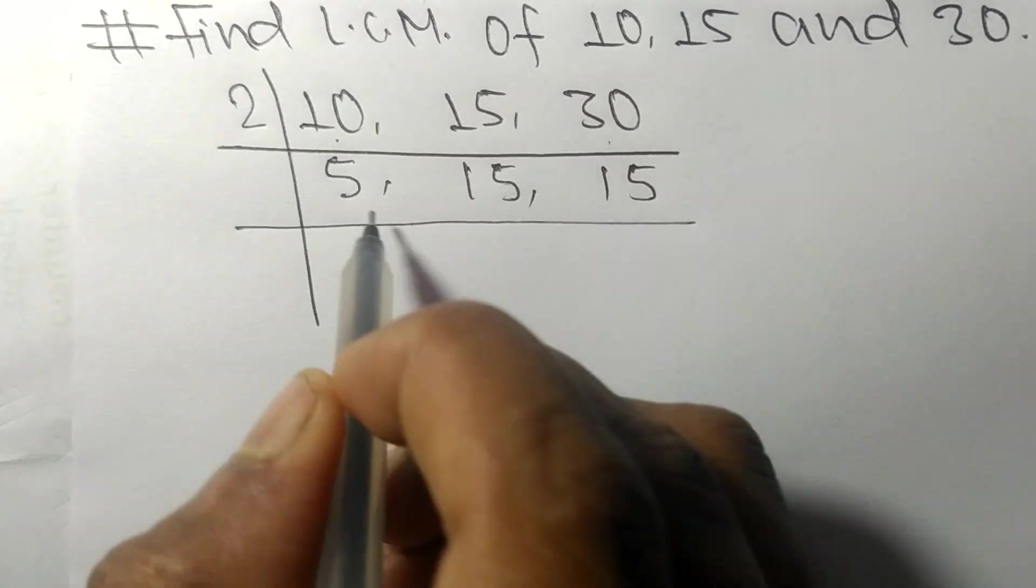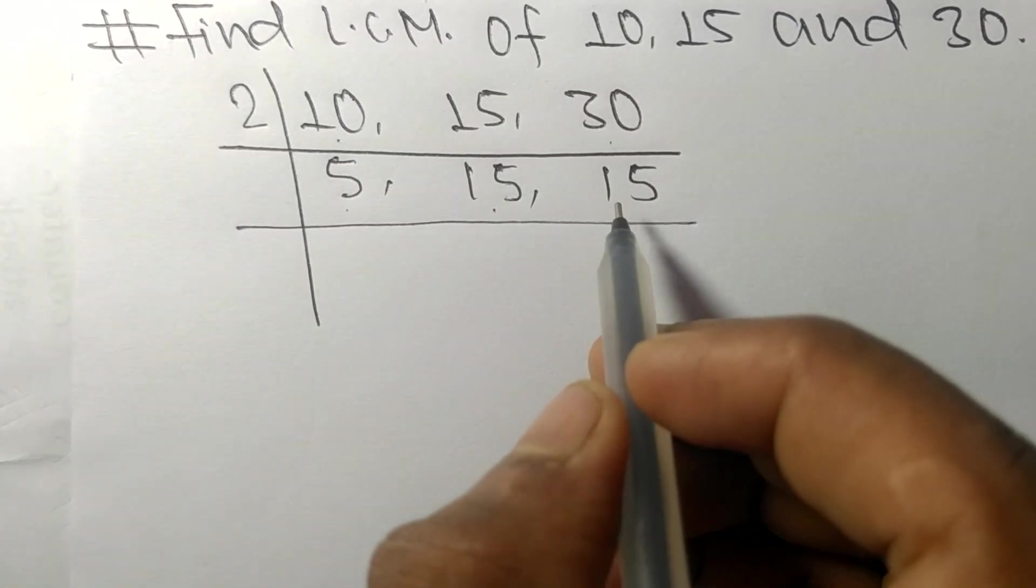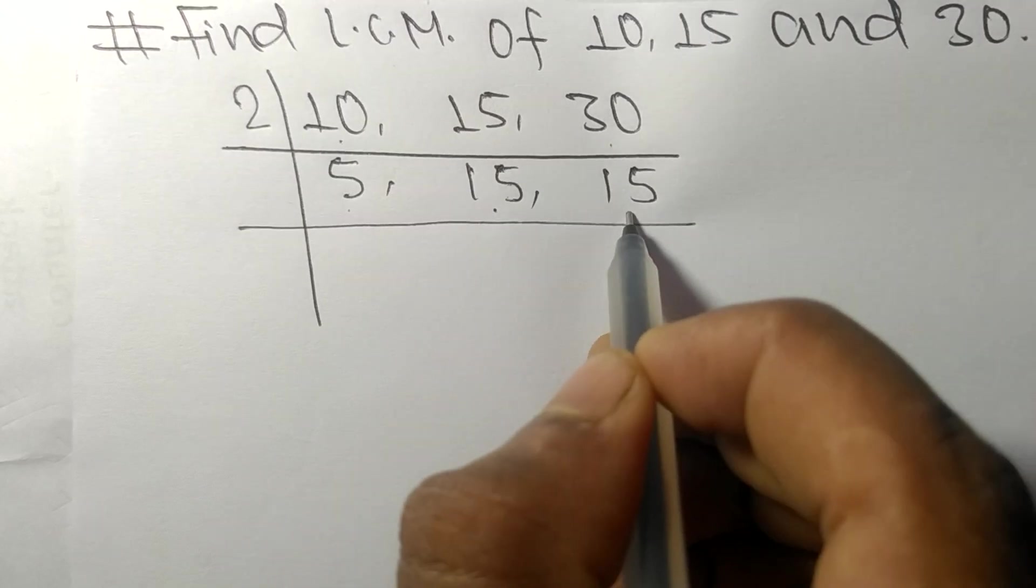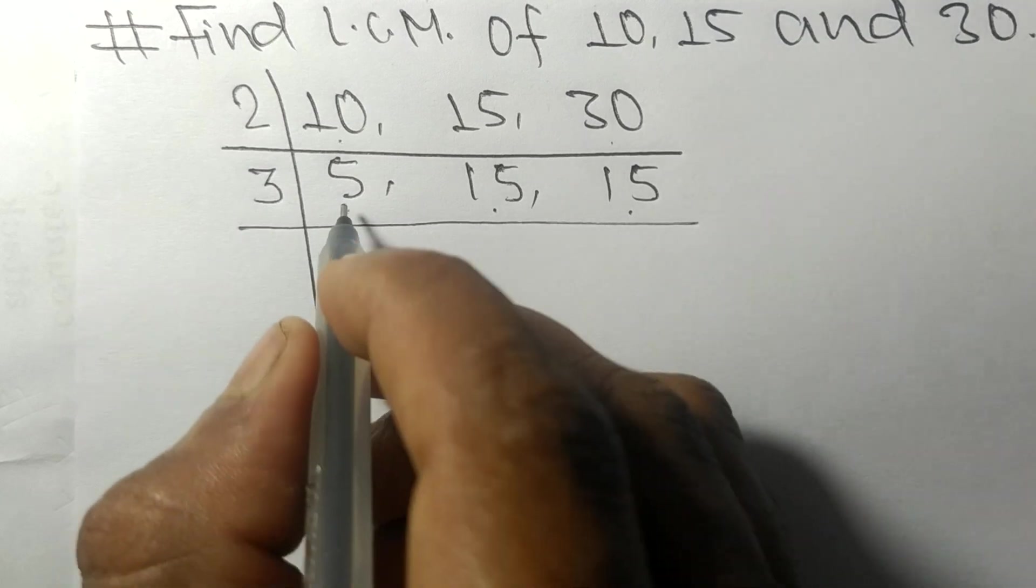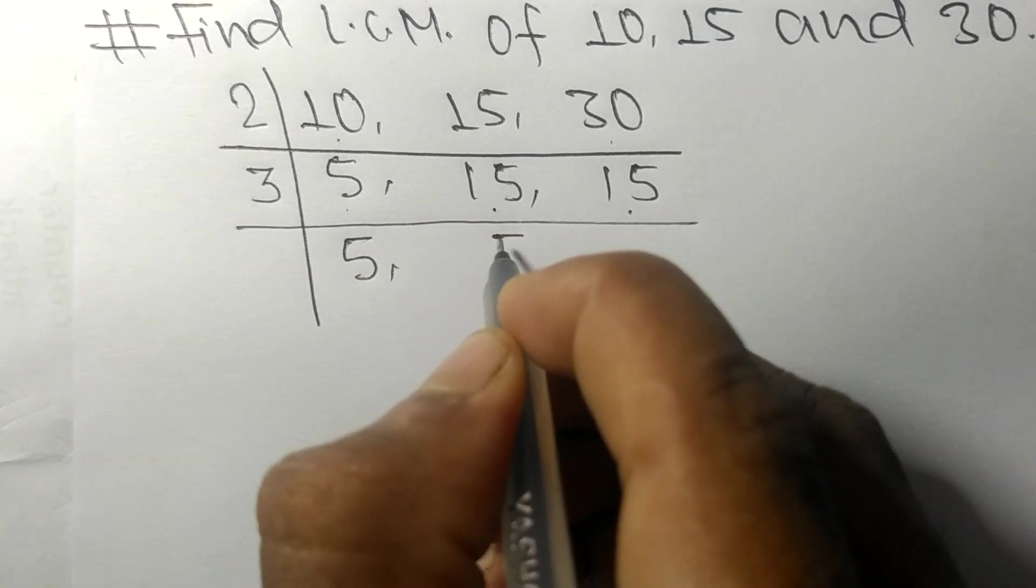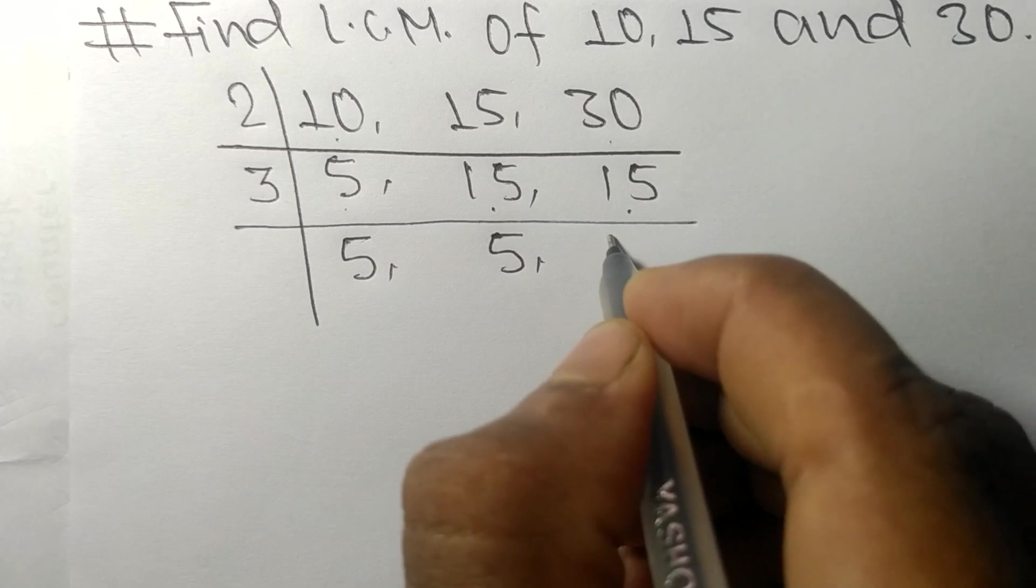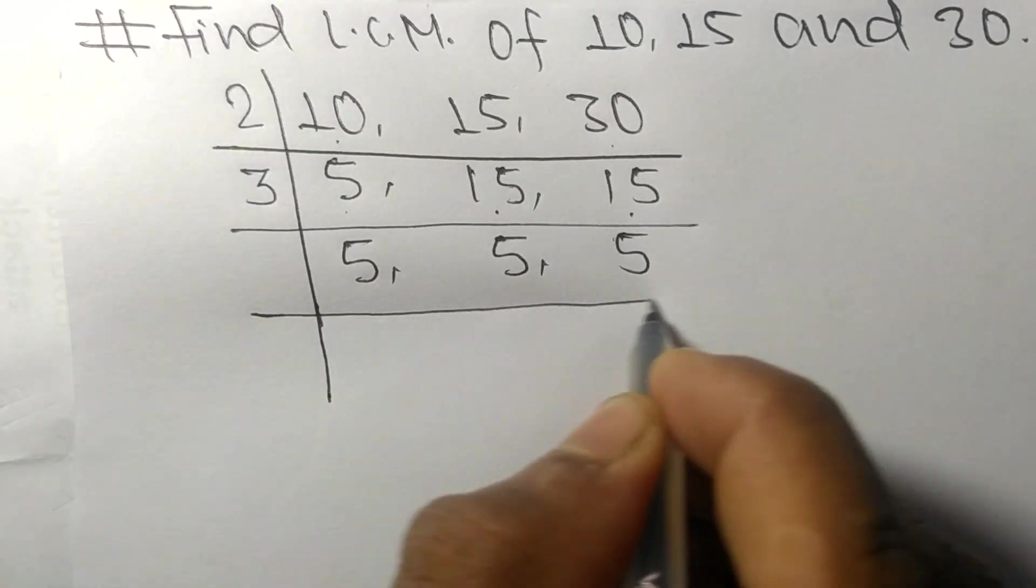Now we have 5, 15, and 15. Among them, both 15s are exactly divisible by 3. 5 is not divisible, so it stays the same. 3 times 5 equals 15, 3 times 5 equals 15. Now we have 5, 5, and 5.